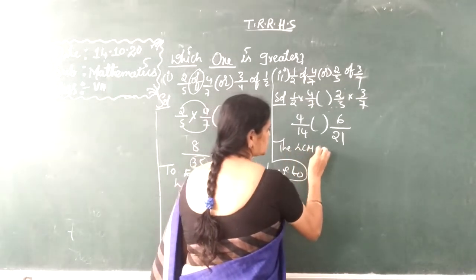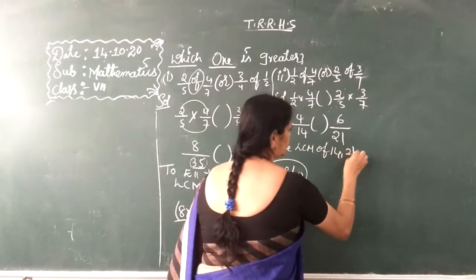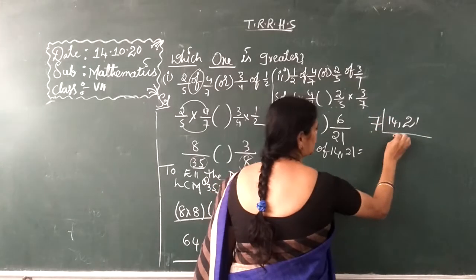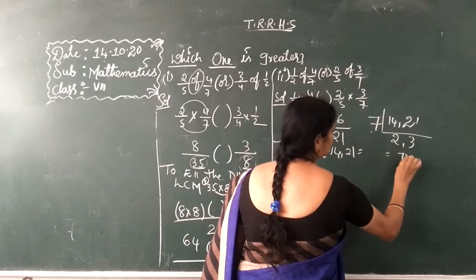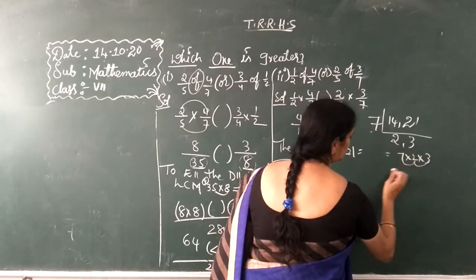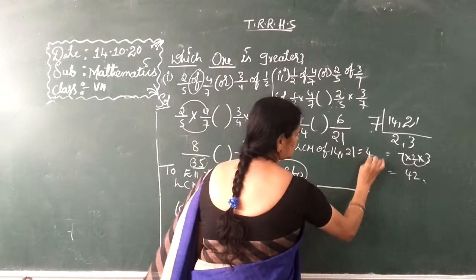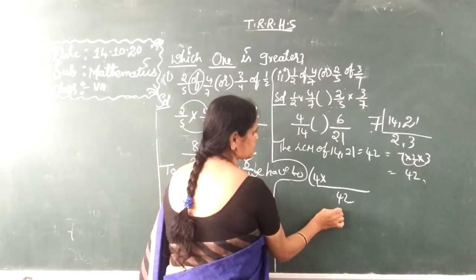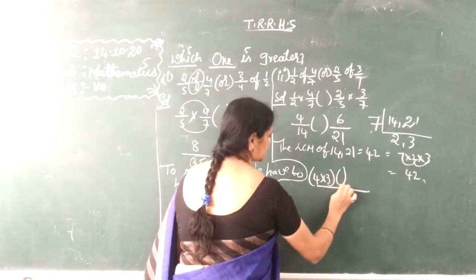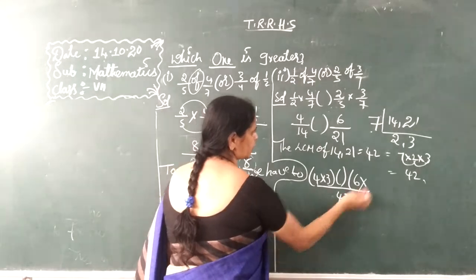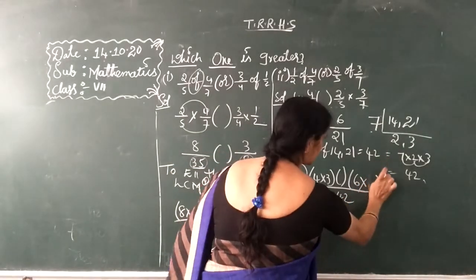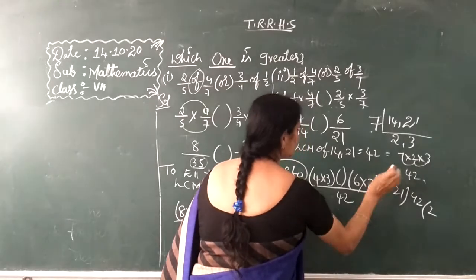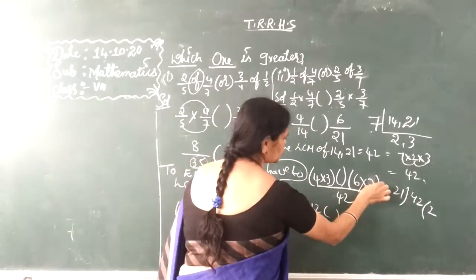So the LCM of 14 and 21 is — let's start doing the LCM. So 14, 21 — you can take 7 common: 7 2's are 14, 7 3's are 21, so 7 into 2 into 3. 7 2's are 14, 14 3's are 42. So right here 14, here 4, here 14. 42 divided by 21 is 2 times — so right here 2. So 4 3's are 12, 6 2's are 12.